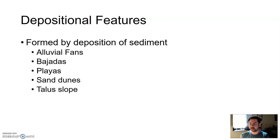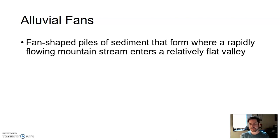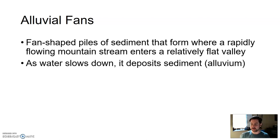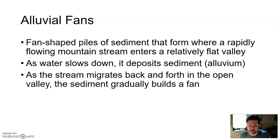Alluvial fans are these fan-shaped piles of sediment that form where a rapidly flowing mountain stream enters a relatively flat valley. These are typically streams that only occur from rain-fueled streams, not always permanent streams. As the stream comes out of the mountains with sediment and hits the flat valley floor, that water spreads out, slows down, deposits sediment. That type of sediment deposited by flowing water is called alluvium, therefore alluvial fans.